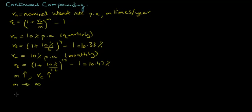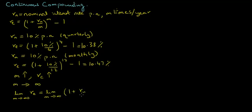This is the case of continuous compounding. The limit as m approaches infinity of the effective annual interest rate equals the limit as m approaches infinity of 1 plus the nominal interest rate divided by m, all to the power m, minus 1, which equals exponential of the nominal rate of interest Rn, minus 1.